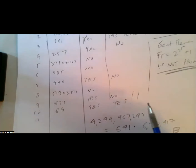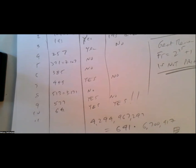This proves the great theorem: F5, which is 2^(2^5) + 1, is not prime. Fermat's conjecture was wrong — it's not true that 2^(2^n) + 1 is always prime.